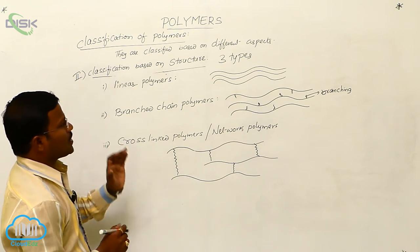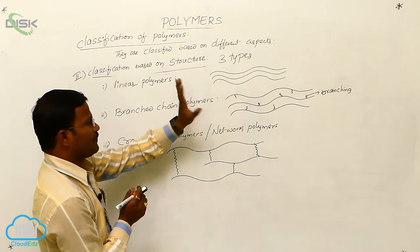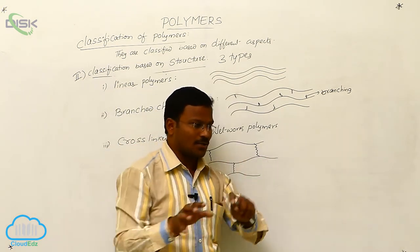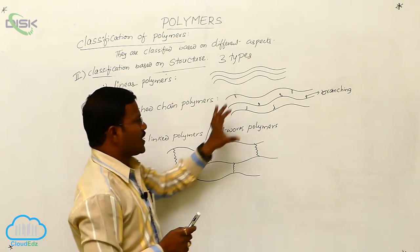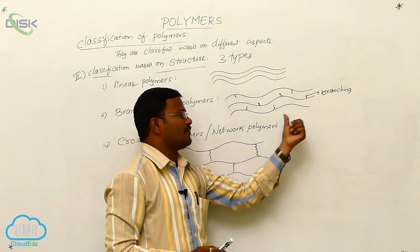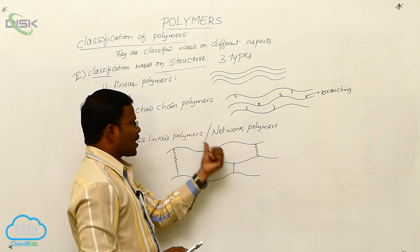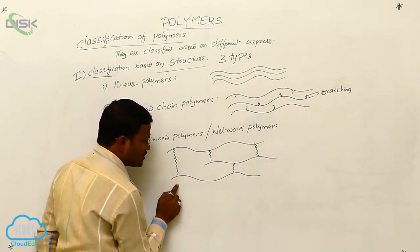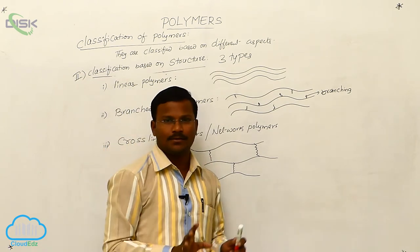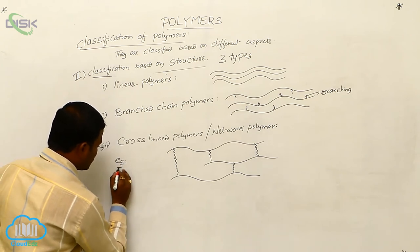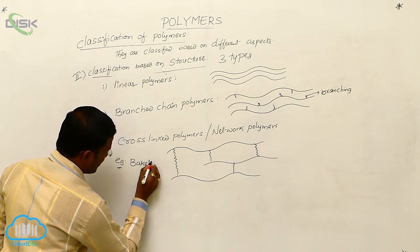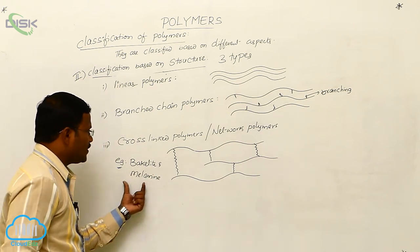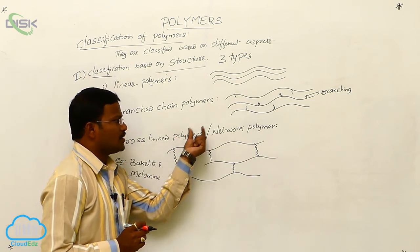To summarize: based on structure, polymers are classified into three types. In linear polymers, all molecules are arranged in a line structure. In branched chain polymers, there is a linear shape but with some branchings somewhere in the chain. In cross-linked or network polymers, in between two linear chains there is a binding interaction — specifically covalent bonding. Examples for cross-linked or network polymers are Bakelite and melamine.